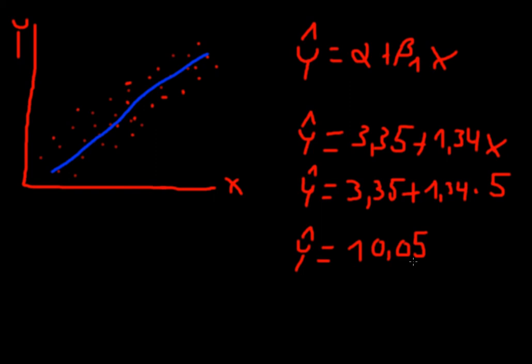So your model tells you that if x is equal to 5, y will be equal to 10.05. And you can do that with all possible values. So again, if you didn't get that, don't worry. It will become clearer as soon as we do some real world examples.